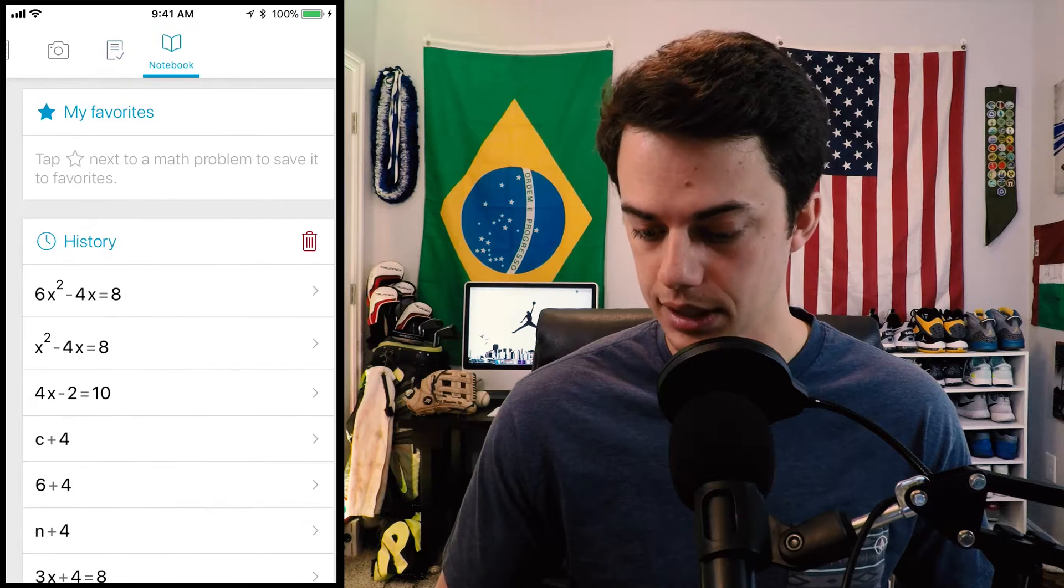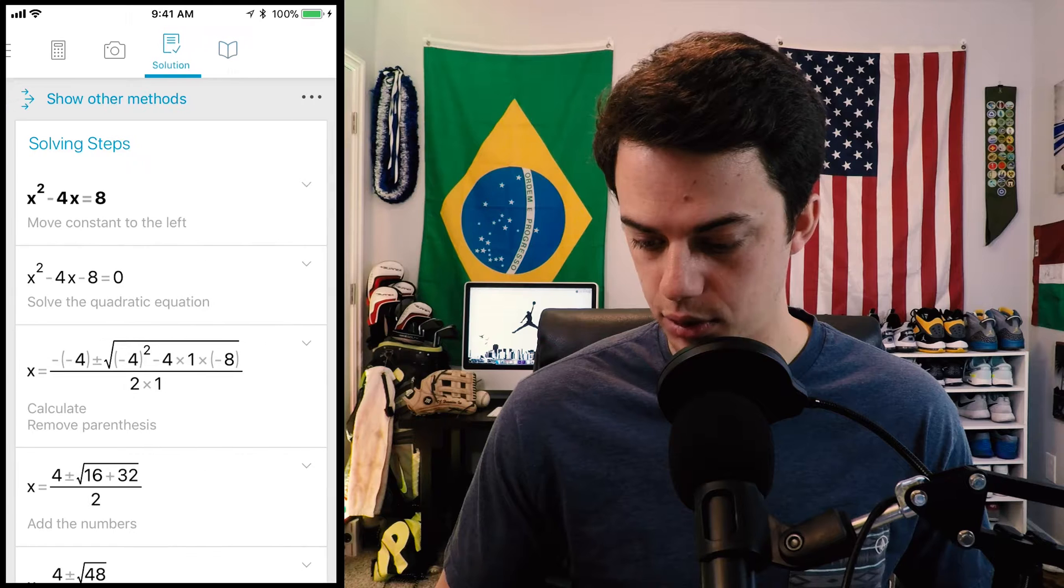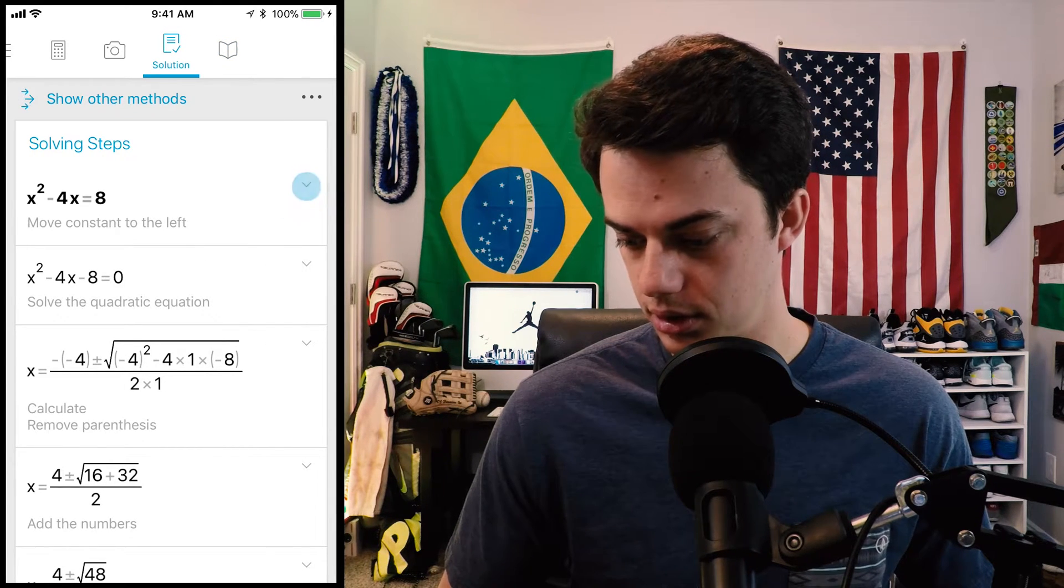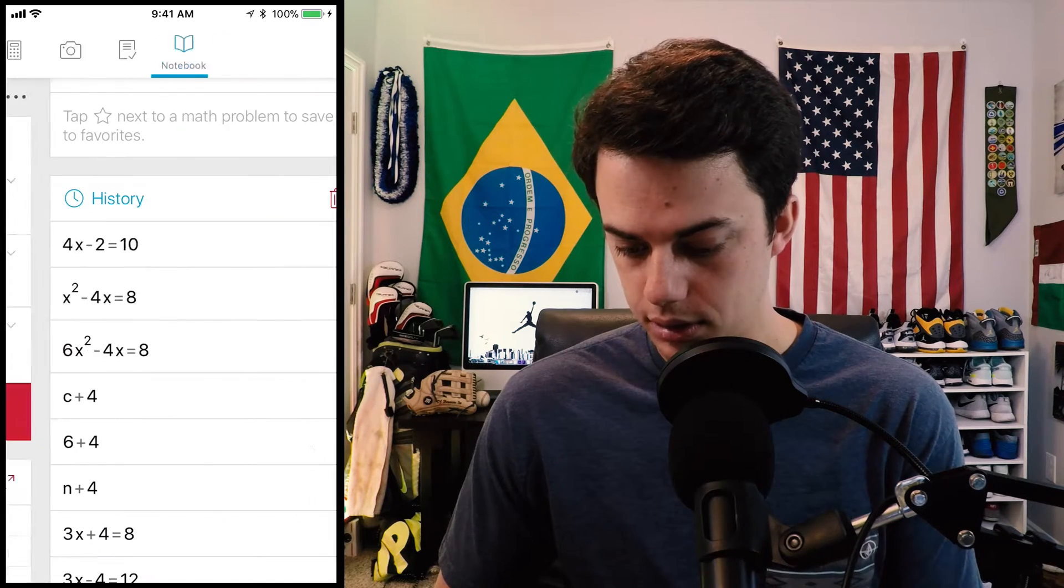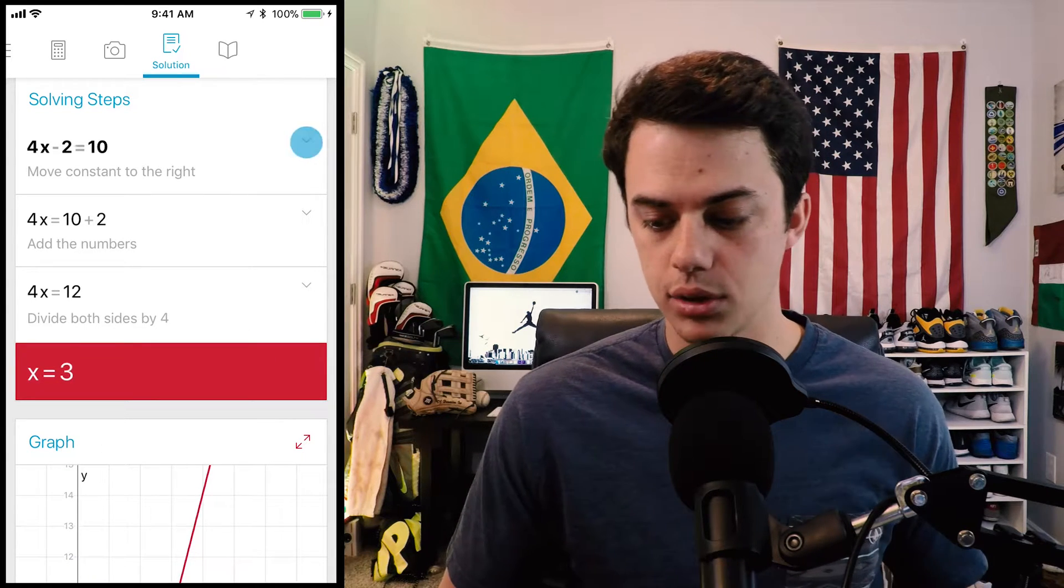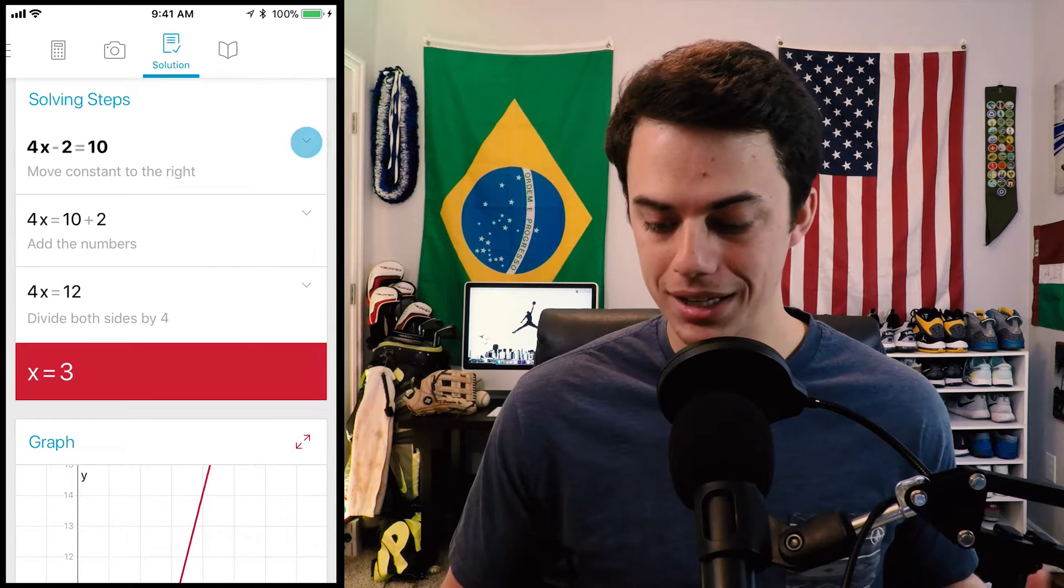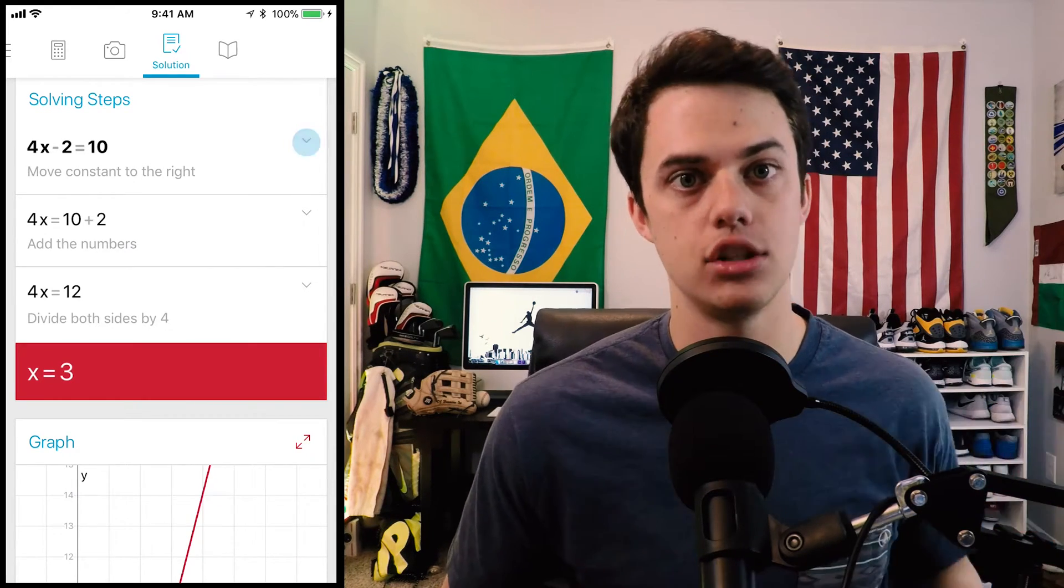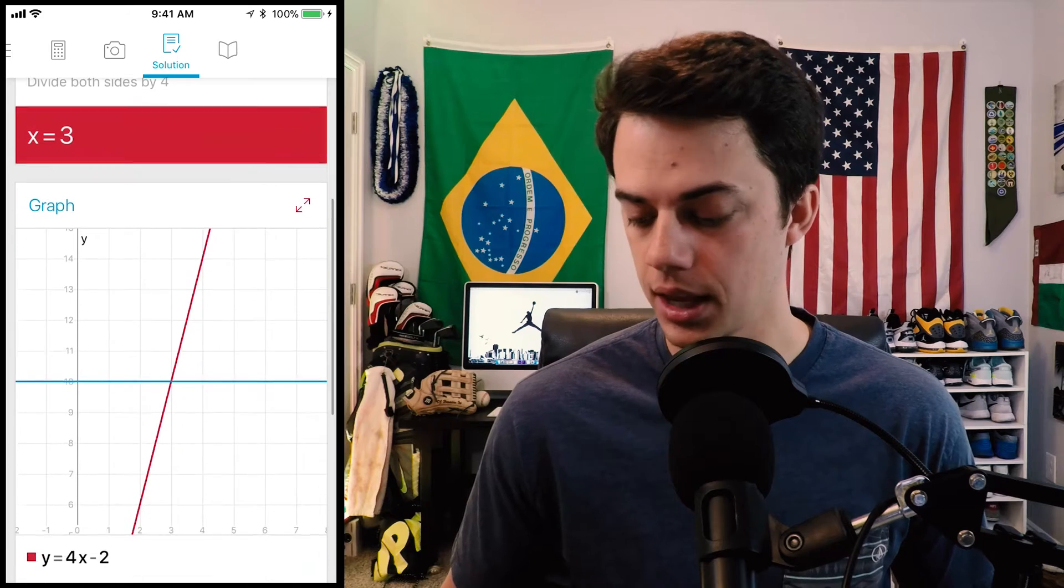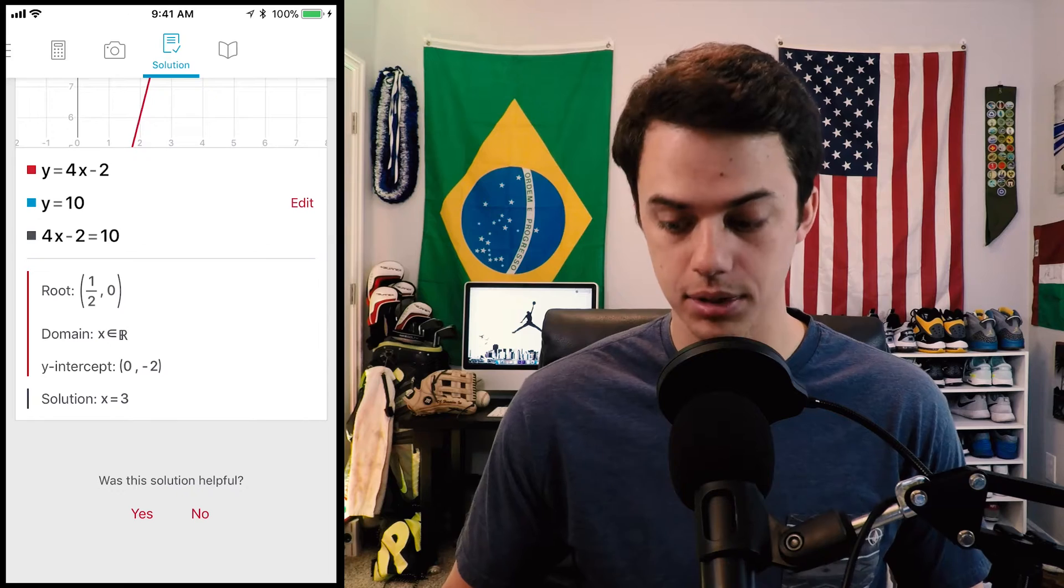I'm going to jump over to history because I want to go back to one of these other problems. Let's do four x minus two equals ten. This is a pretty simple one but you'll see it just tells you exactly: move the constant to the right, add the numbers. This is basic algebra math but the nice thing is that it does explain to you how to do the problem. So instead of just spitting out the answer it can help you learn. Then it will graph it for you. You can see the domain, the y intercept, the roots.